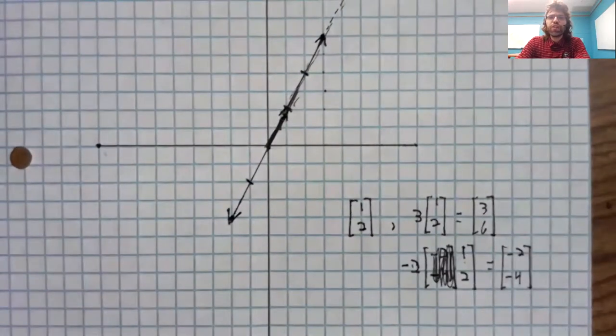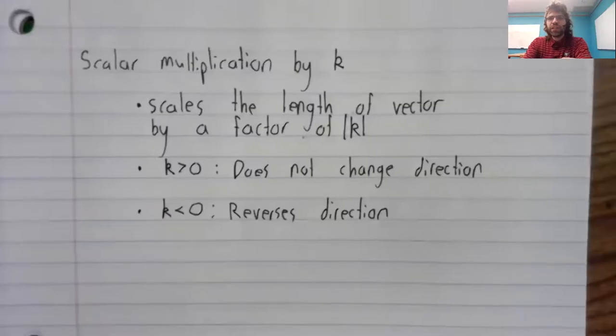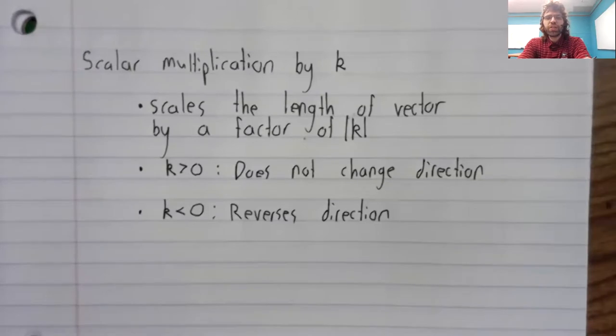So if I were to summarize all that. Scalar multiplication by k scales the length of the vector. And then depending on whether k is positive or negative, it either does not change the direction of the vector, or it perfectly reverses the direction of the vector.